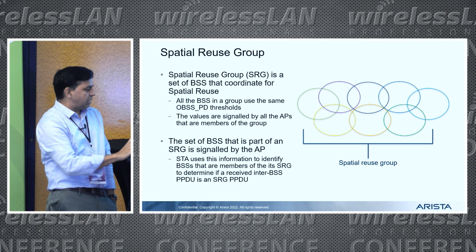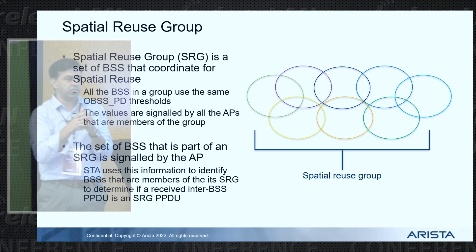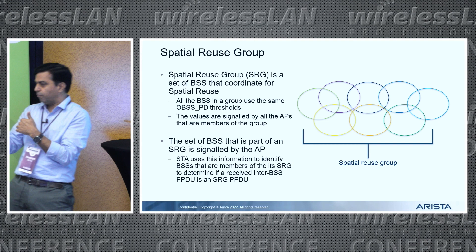There is another flavor called the spatial reuse group-based scheme, which essentially tries to coordinate spatial reuse within a network. For example, in a managed network where all the APs belong to you, it makes sense to have the same thresholds for all APs. You define a group of BSS by selecting a set of colors — any BSS belonging to this set of colors will apply the same BSS threshold for minimum and maximum values. This information is communicated by the access point to all stations, so each station learns the group members and the thresholds to apply when determining whether spatial reuse can be used.